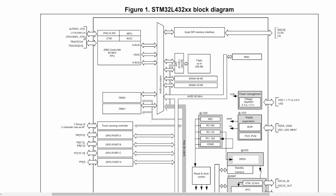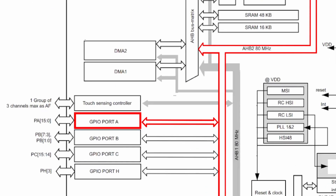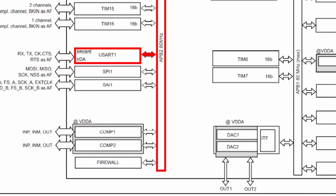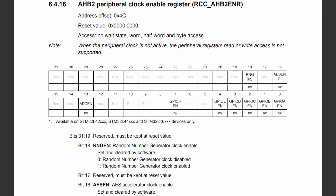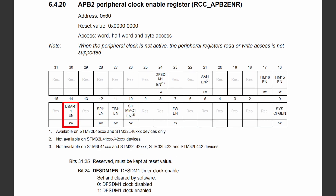The clocks for the GPIO port and the UART peripheral need to be enabled before they can be used. The block diagram in the datasheet tells me that GPIO port A is located on the AHB2 bus and UART1 is located on the APB2 bus. Bit 0 of the AHB2 peripheral clock enable register enables the clock for GPIO port A, and bit 14 of the APB2 peripheral clock enable register enables the clock for UART1.